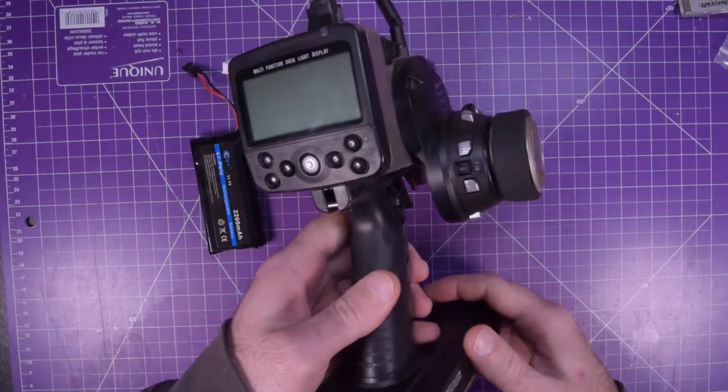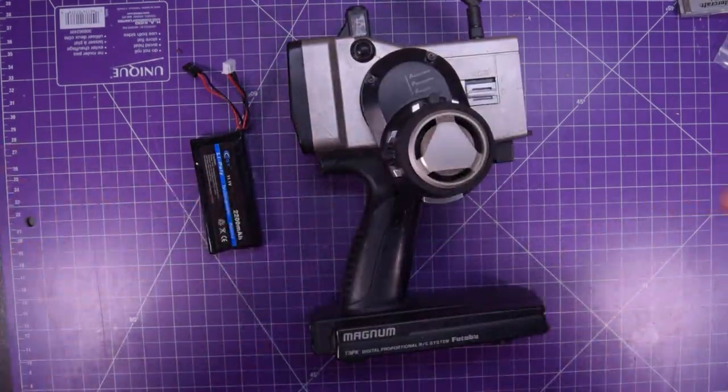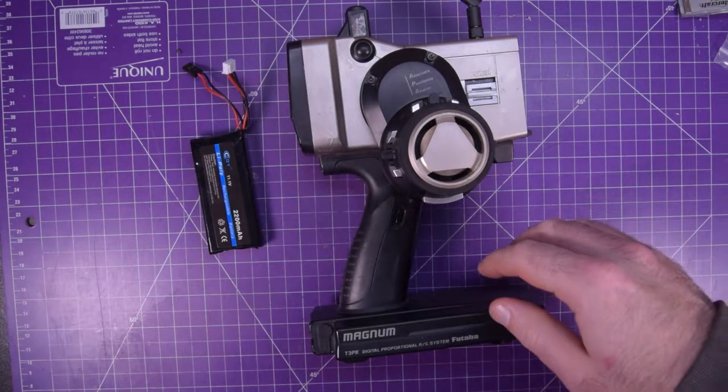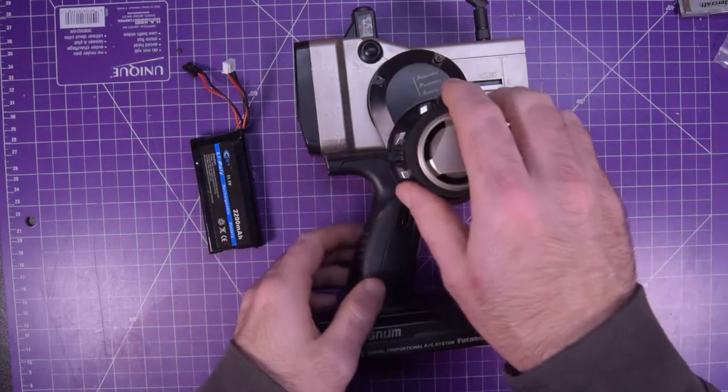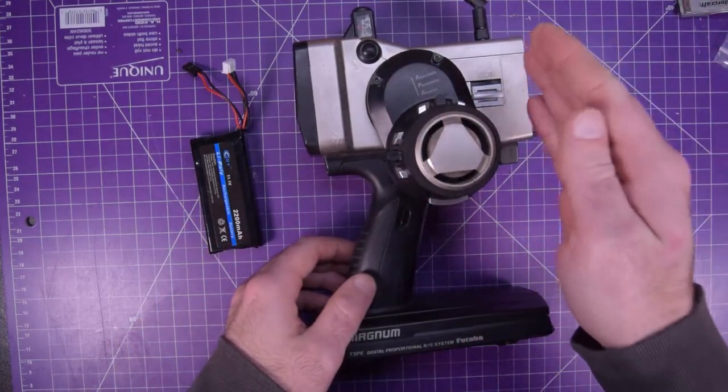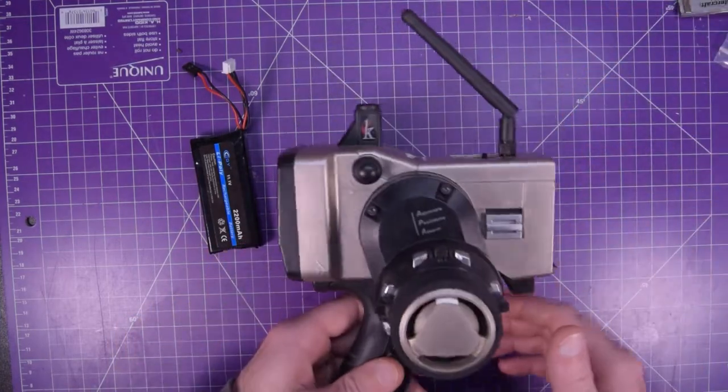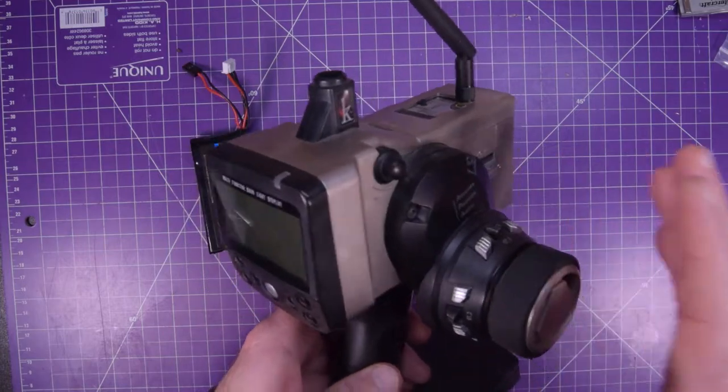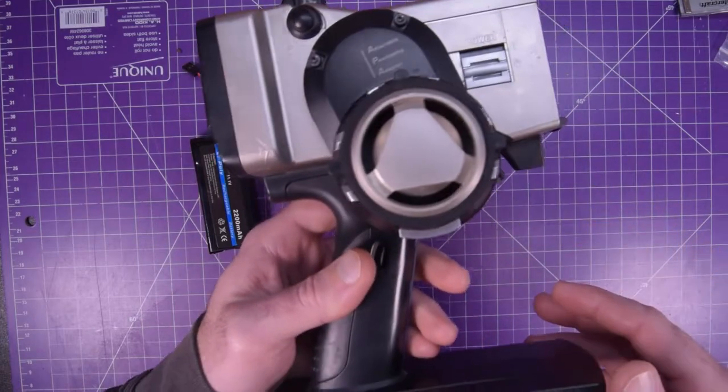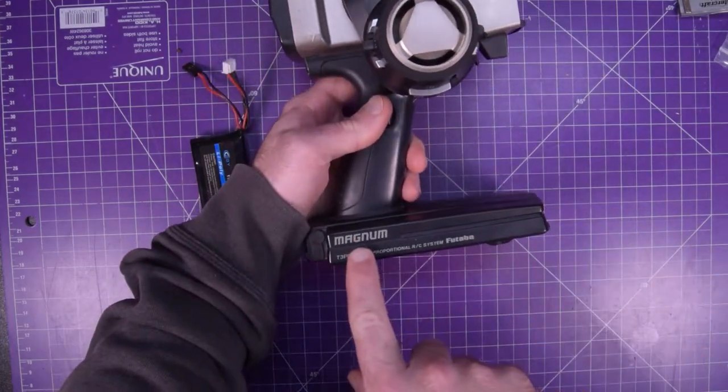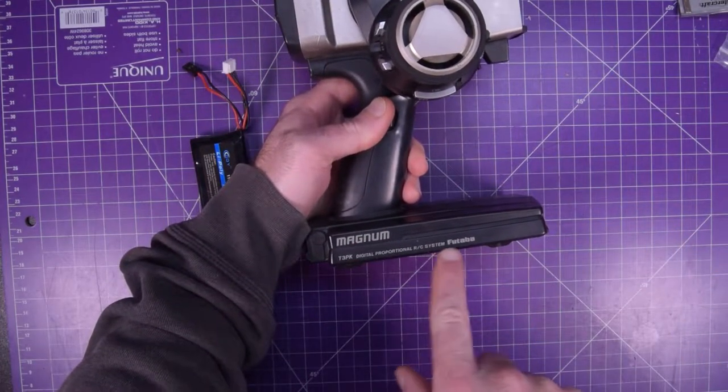So as you guys know, I do a lot of remote control stuff, or at least I'm an enthusiast for remote control stuff. And this here is a really high quality but very old remote control transmitter. This is a Futaba T3PK, I believe. Yeah, the Futaba Magnum T3PK.